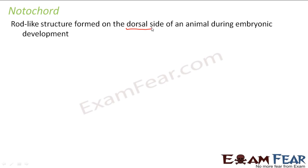The notochord also plays a very important role in development of the vertebral column. This rod-like structure denotes the primitive axis of the embryo — it is one of the first axes formed in that small embryo. The presence or absence of this notochord helps in classifying organisms in the animal kingdom, because it is not present in all animals. In some there is no notochord; in some it is present throughout the lifetime; whereas in others it is present only during the embryonic stages, and when the animal turns into an adult, it is no more present.